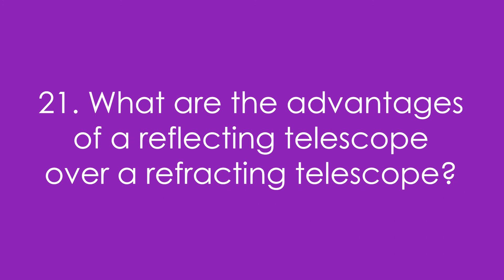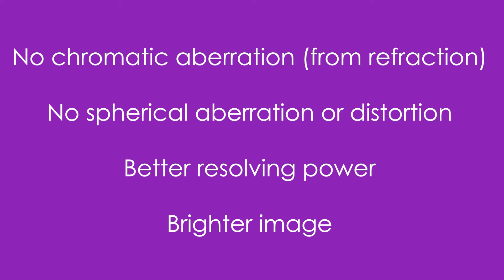Question 21: What are the advantages of a reflecting telescope over a refracting telescope? We get no chromatic aberration that we do from refraction. We get no spherical aberration or distortion. We have better resolving power and a brighter image as well.